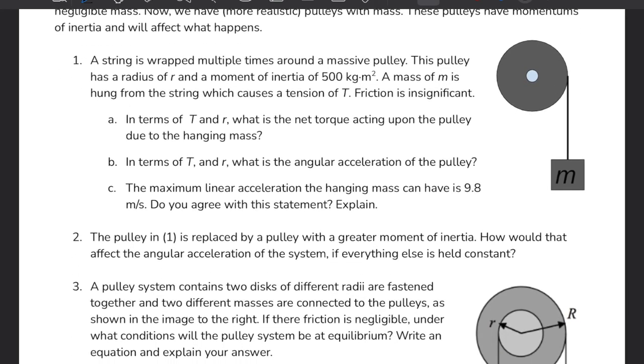A string is wrapped multiple times around a massive pulley. The pulley has radius r and moment of inertia 500. The mass of m is hanging from the string, which causes tension T. Friction is insignificant. In terms of T and r, what is the net torque acting upon the pulley due to the hanging mass?